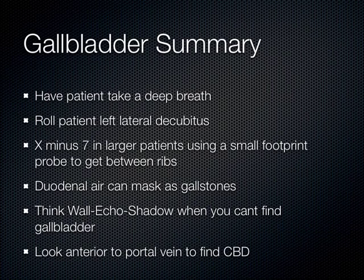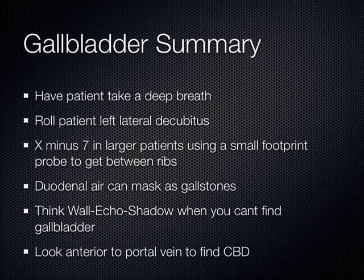In summary: have the patient take a deep breath and hold it. Roll the patient left lateral decubitus — sometimes that gets the duodenum to fall out of the way. X minus 7 in larger patients to get between the ribs; switch to a small footprint probe like a microconvex or the P21, which is perfect for getting between the ribs. Duodenal air can sometimes look like gallstones, and when you can't find the gallbladder, wonder about a contracted gallbladder around a stone — the WES sign. When looking for the common bile duct, look anterior to the portal vein.